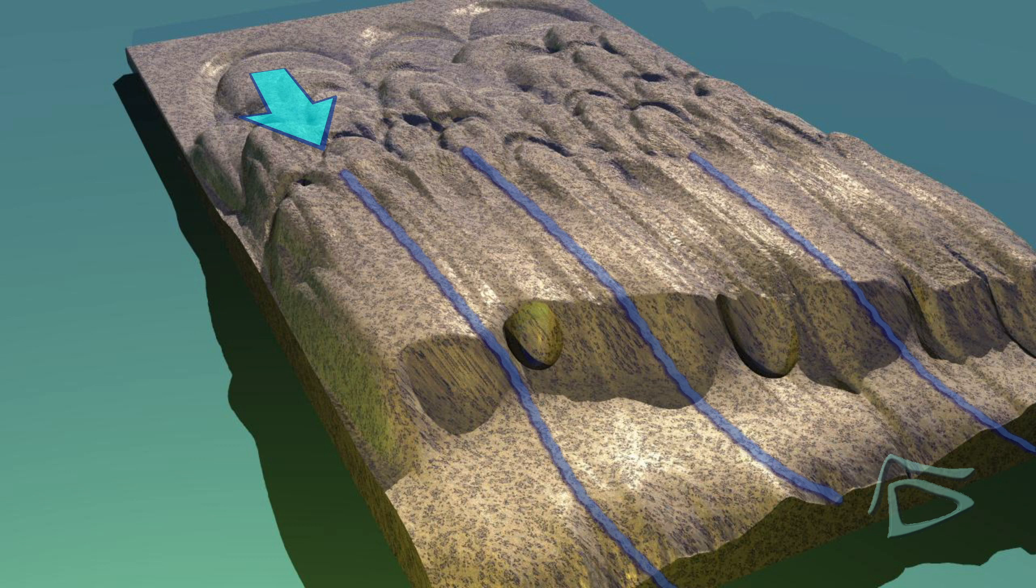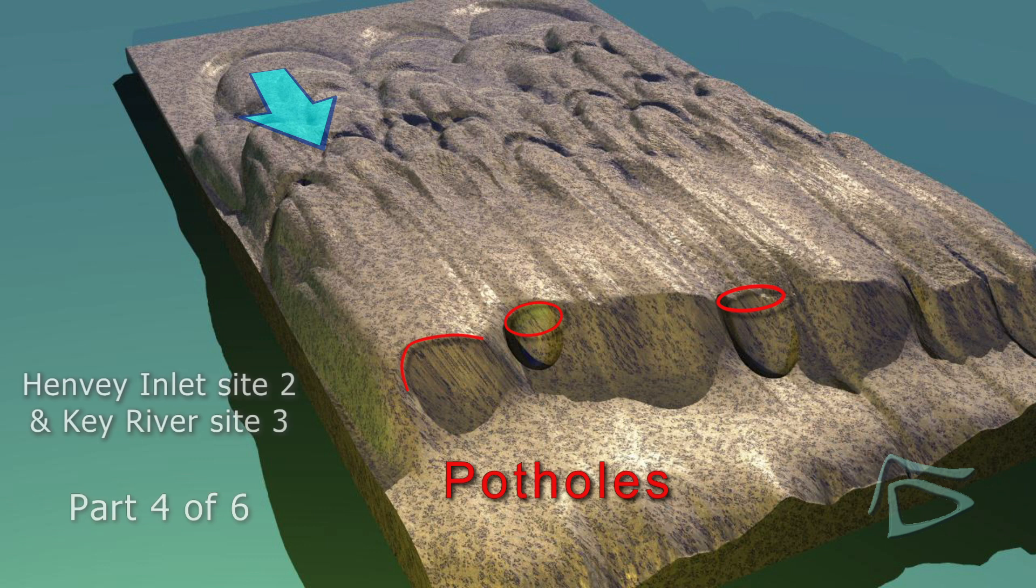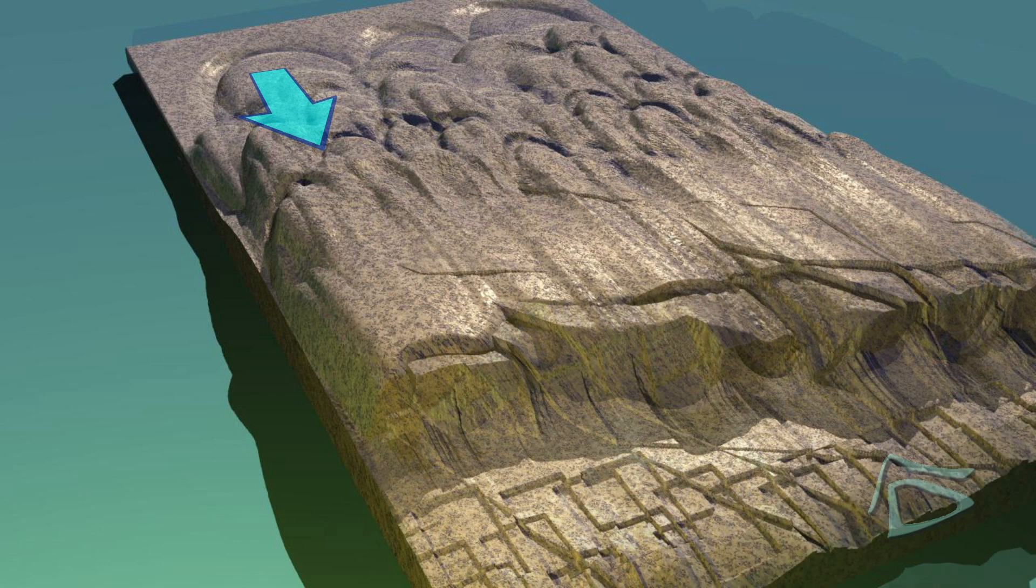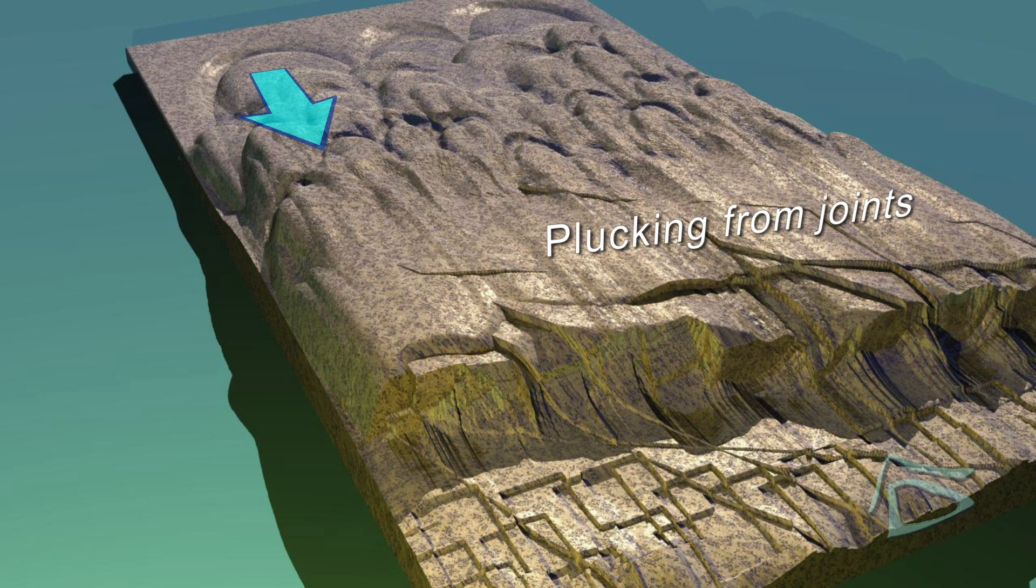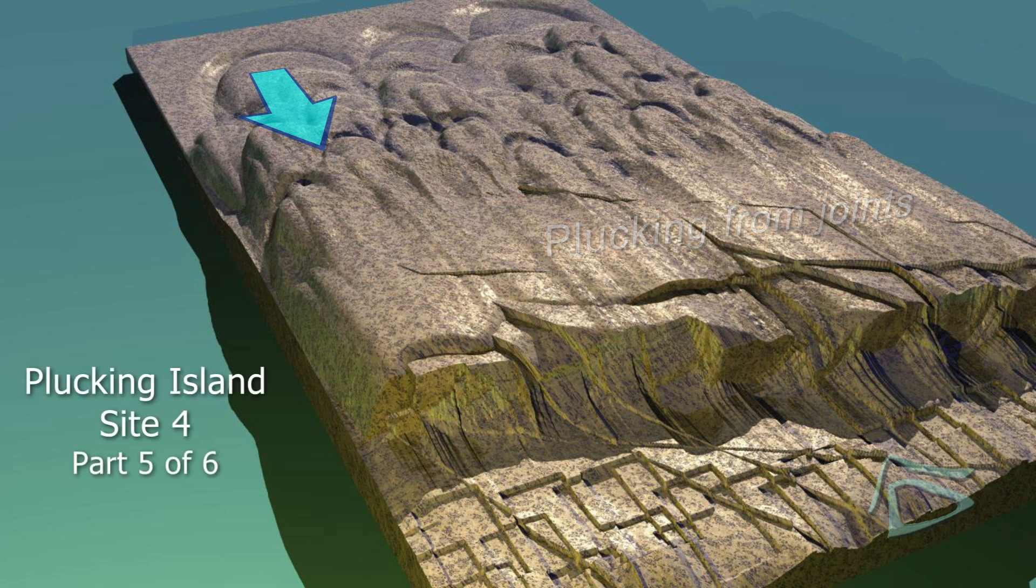Video 4, Key River and Henvey Inlet, illustrate pothole formation. On lee side, plucking is common along existing joints. Video 5, Plucking Island, illustrates different types of plucking.